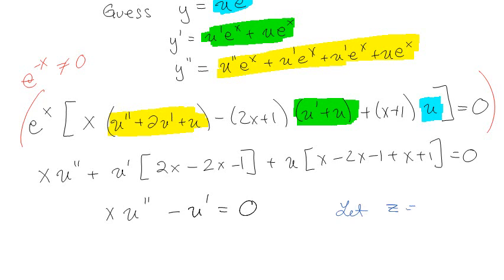I'm actually just going to pretend that it's not. I'm going to let z equal u', and therefore z' equals u'', and I'm going to make a straightforward substitution. So xz' - z = 0.